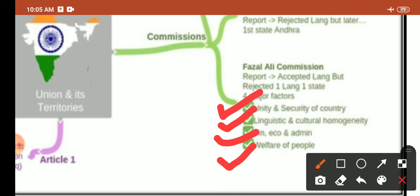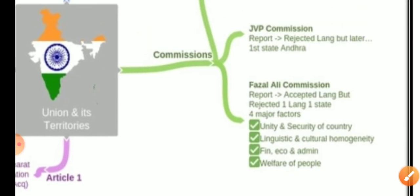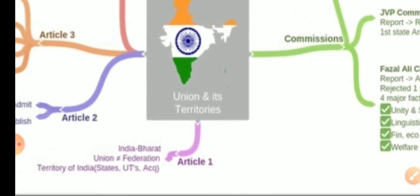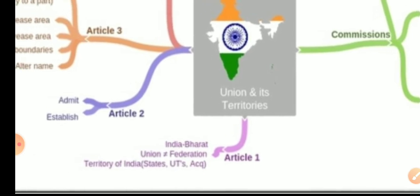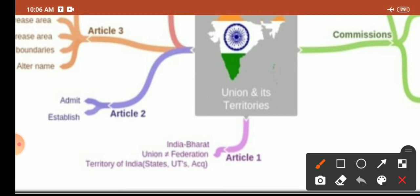Now regarding the articles related to the Union and Its Territory: these deal with Articles 1 to 4, which belong to Part I of the Constitution.